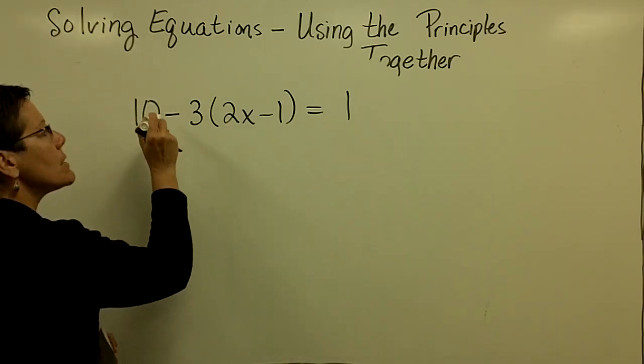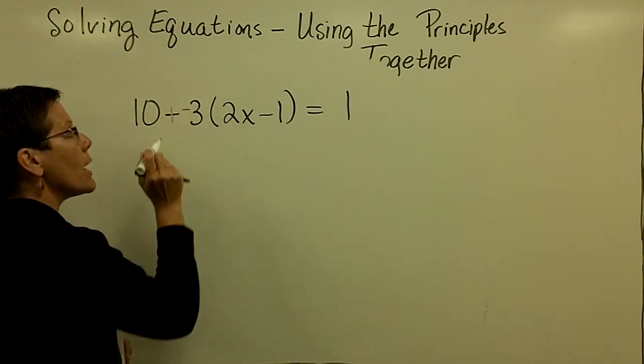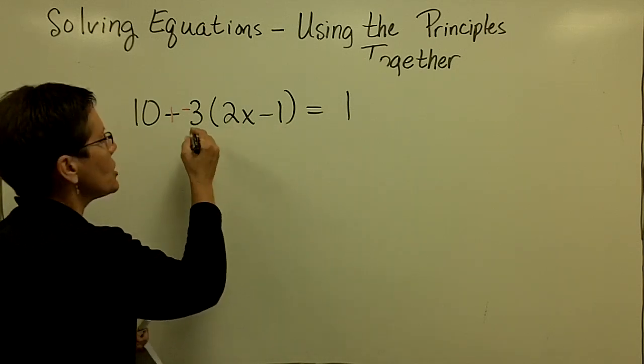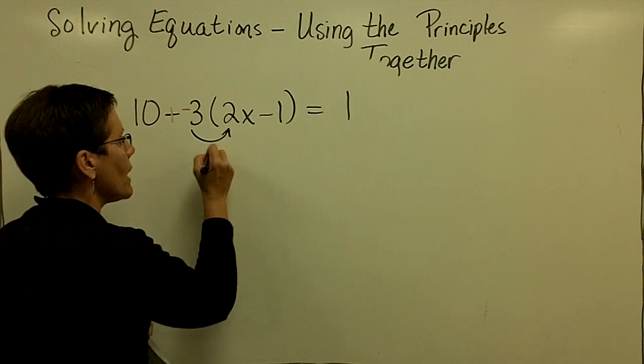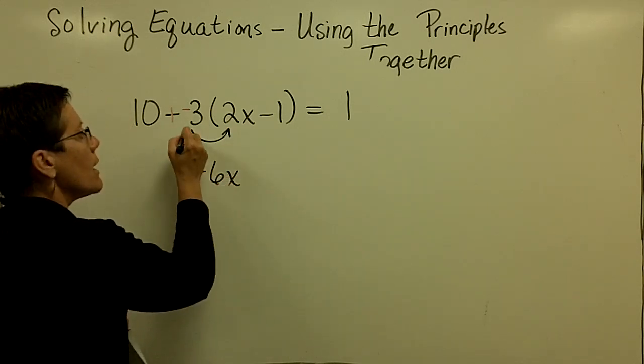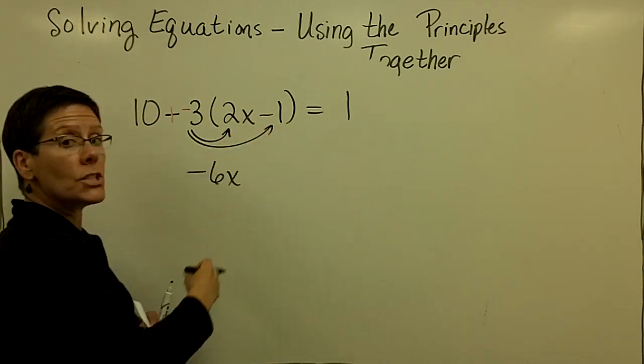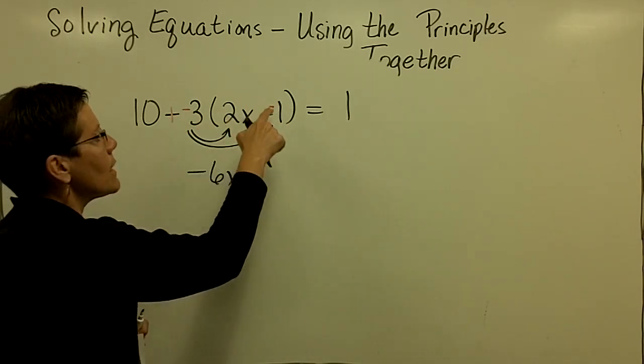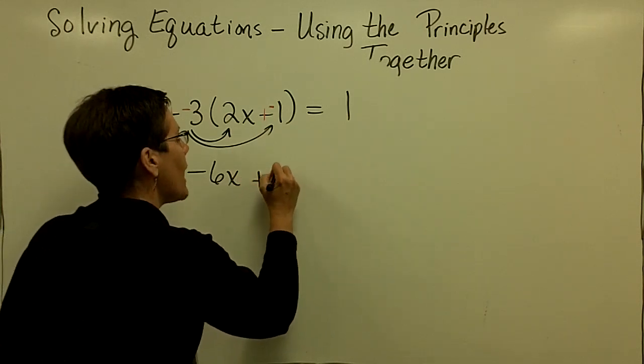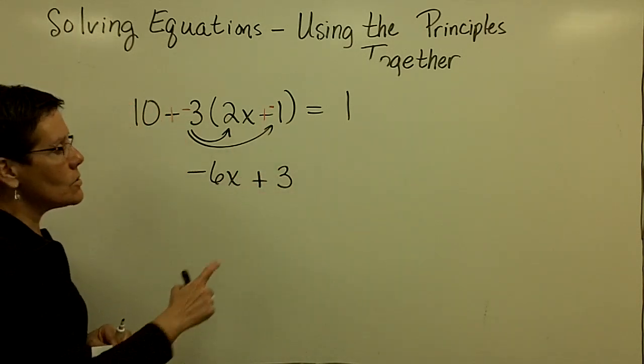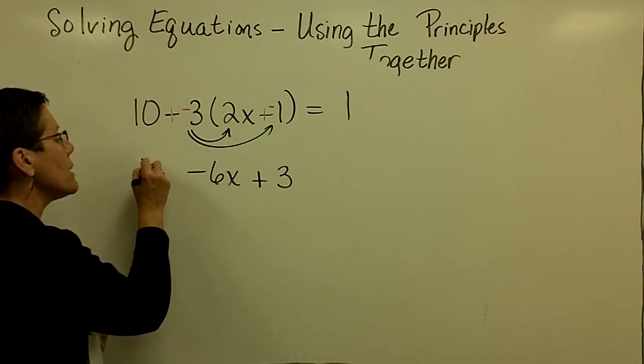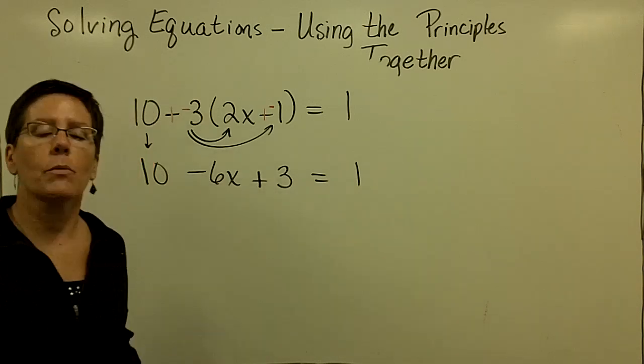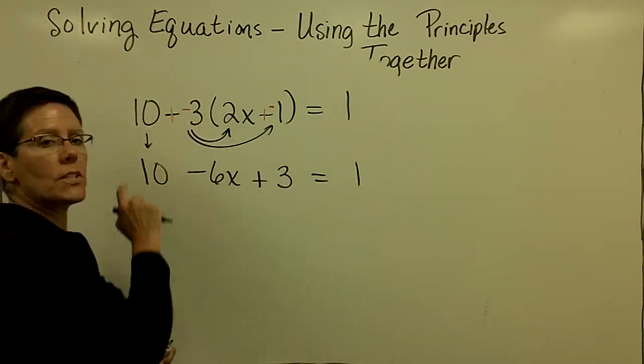So these two terms have to have their signs changed because a negative 3 times a positive 2 is a negative 6x. And a negative 3 times, essentially, it's a negative 1. Look at that right there. It was a minus 1. A negative 3 times a negative 1 is a positive 3. So that sign is very, very important. Bring that 10 down now. You didn't do anything with it. Let's bring the 1 down. We got rid of the parentheses. Very, very important to watch that negative sign.